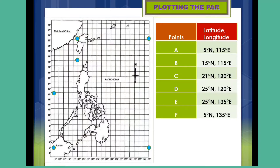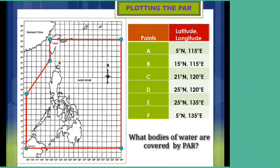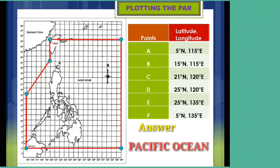We will draw lines from point A to B, B to C, C to D, D to E, and E to F. As you can see, that is the Philippine Area of Responsibility. Question: what bodies of water are covered by the PAR? Very good — the Pacific Ocean.